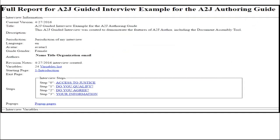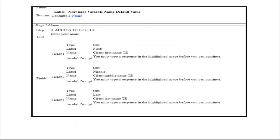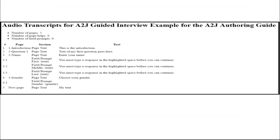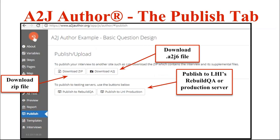Here is an example of a full report. At the very beginning you can see it has metadata about the guided interview — the jurisdiction and the steps that are used. This screenshot shows close-up what would be displayed when you generate a full report. And here is an example of an audio transcript for that same interview. The full report was several pages long, while the audio transcript is just a short paragraph showing the text that needs to be translated.